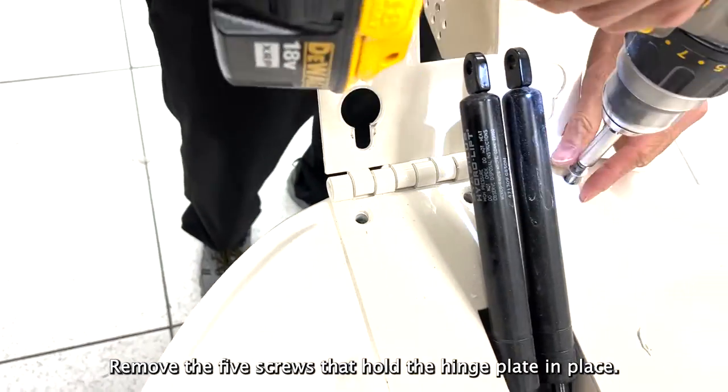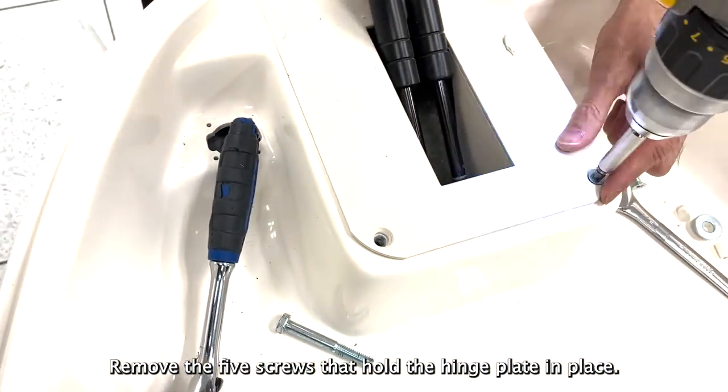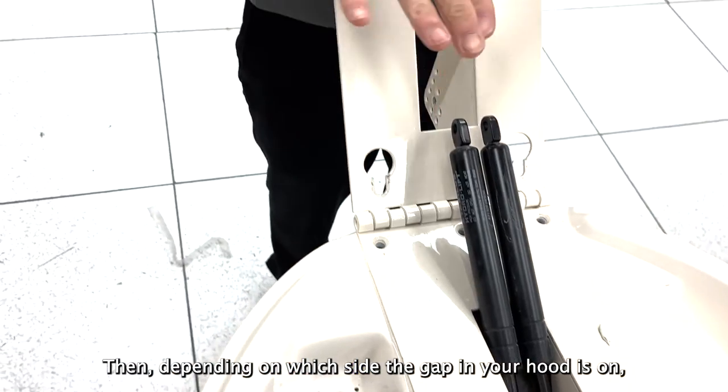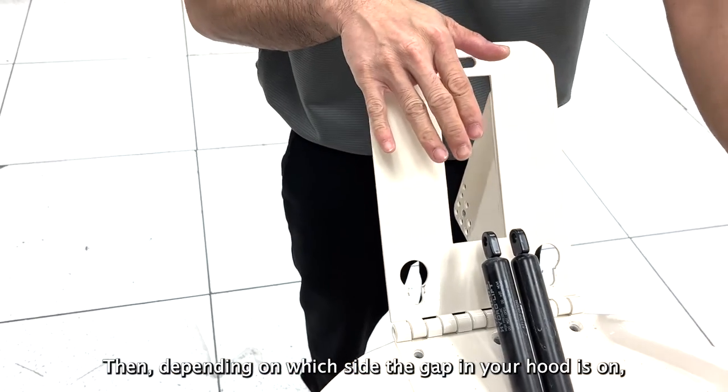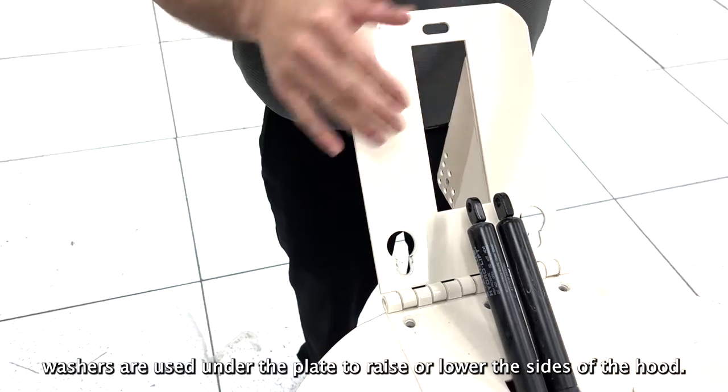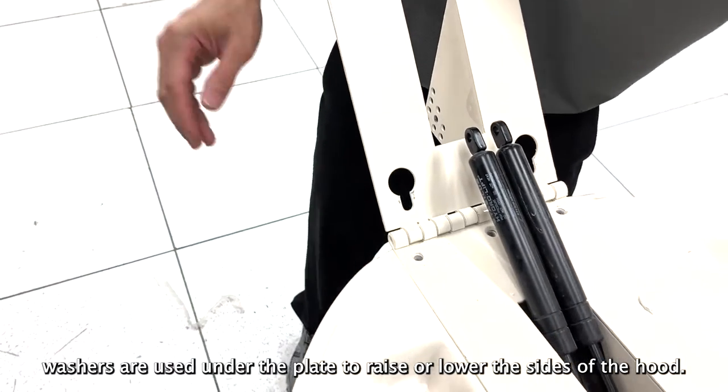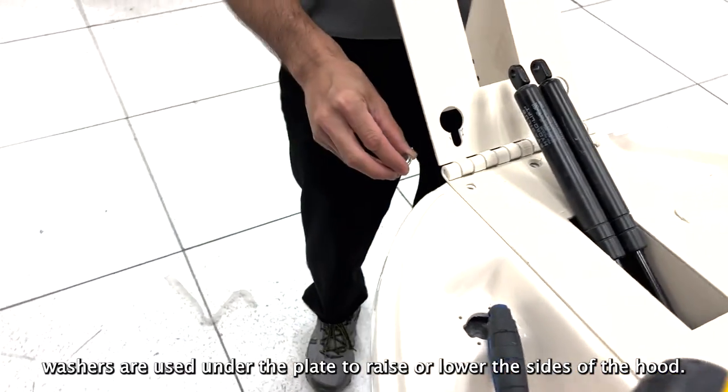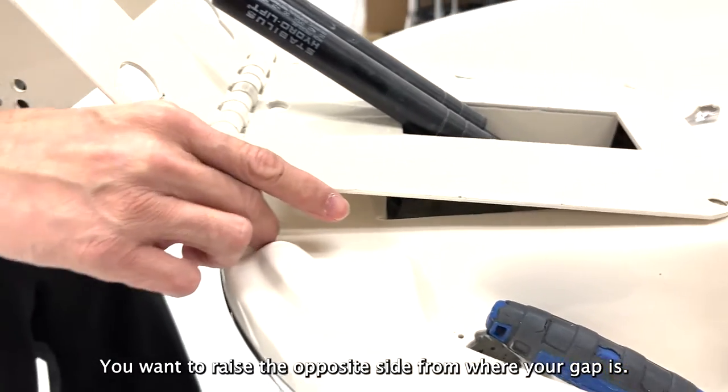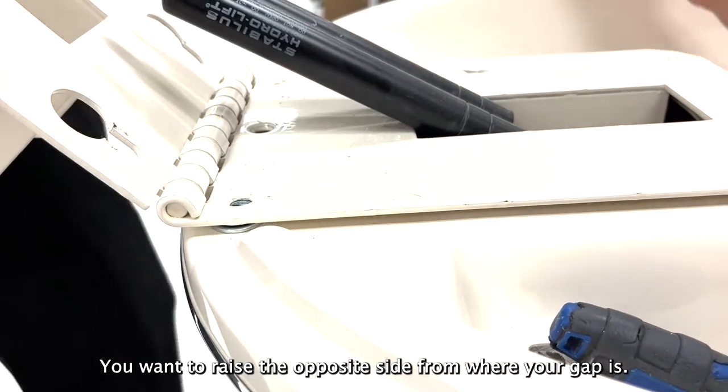Remove the five screws that hold the hinge plate in place. Then, depending on which side the gap on your hood is, washers are used under the plate to raise or lower the sides of the hood. You want to raise the opposite side from where your gap is.